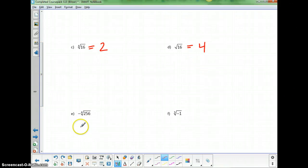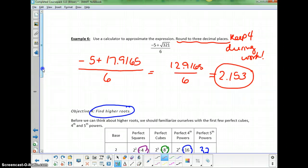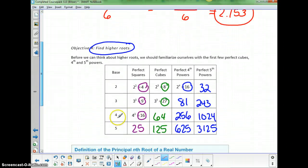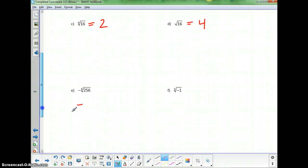Negative the fourth root of 256. We can do this. That is 256 and the fourth root is 4.